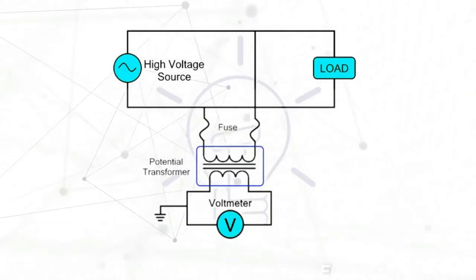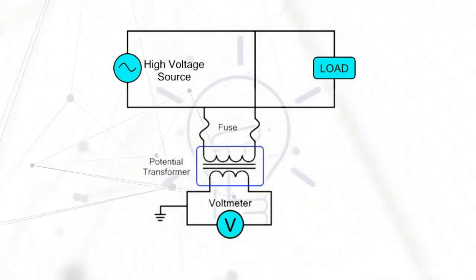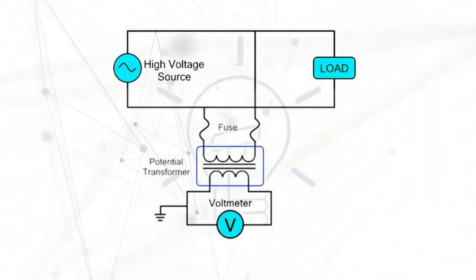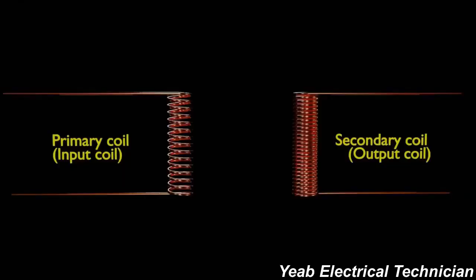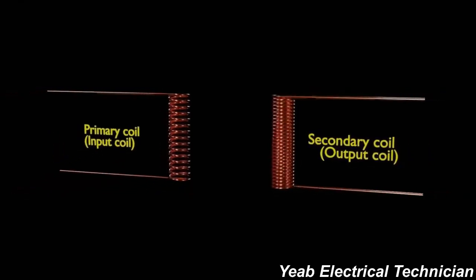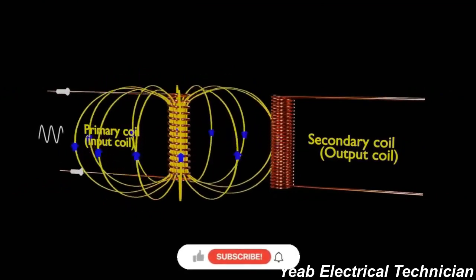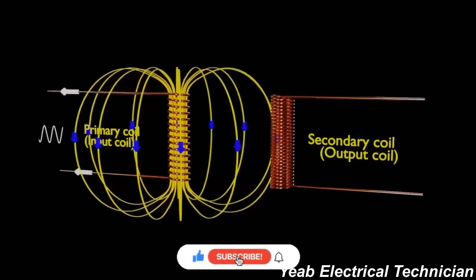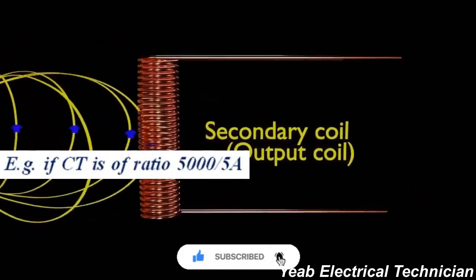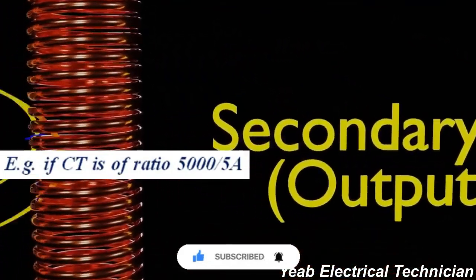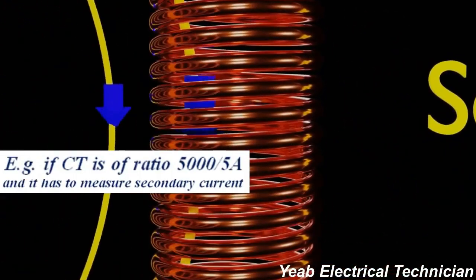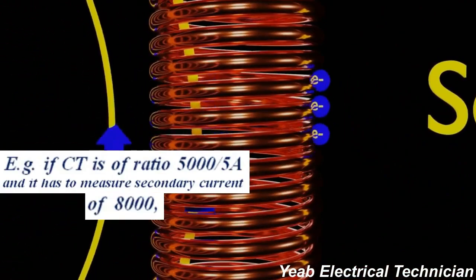So CT and PT are introduced in the circuit. They work on the same principle of transformer, which is based on the linkage of electromagnetic flux produced by the primary with the secondary. They work on the ratio they are designed for. For example, if CT is of ratio 5000 per 5 ampere and it has to measure secondary current of 8000, then...